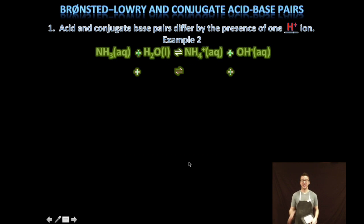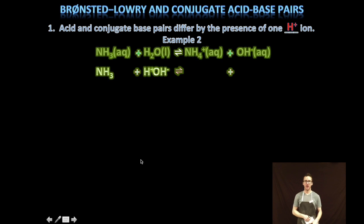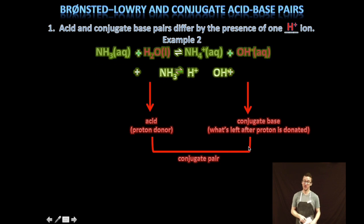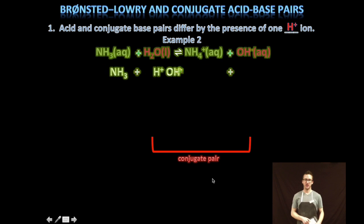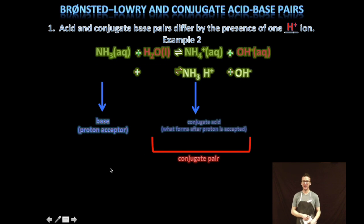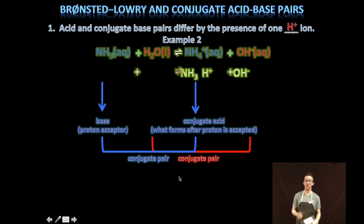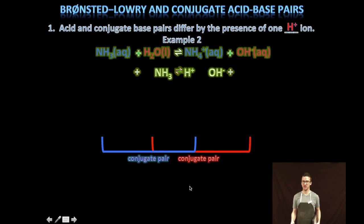Let's look at a second example: ammonia, NH3, added to water forms the ammonium ion, NH4+, and hydroxide ion, OH-. In this reaction, water acts as an acid — a proton donor — and its conjugate base is the hydroxide ion. The second conjugate pair: ammonia acts as a base, or proton acceptor, and its conjugate acid — what forms after it accepts the proton — is the ammonium ion. Again, two conjugate pairs, each differing by one hydrogen ion.